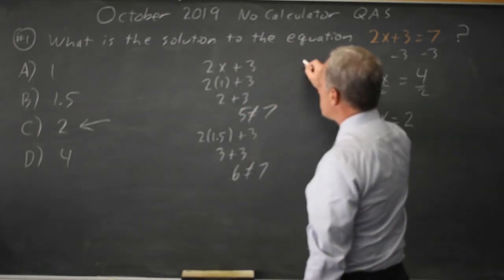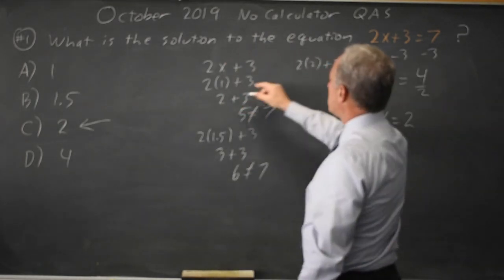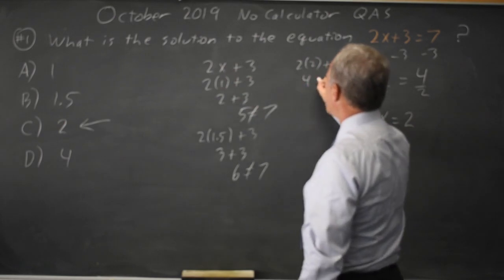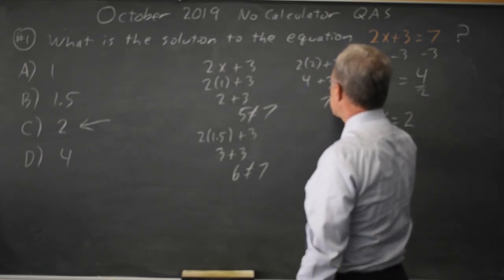If I try 2, that's twice 2 plus 3, for 2x plus 3 is 4 plus 3, and that is 7.